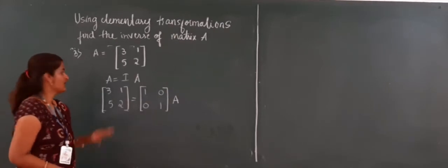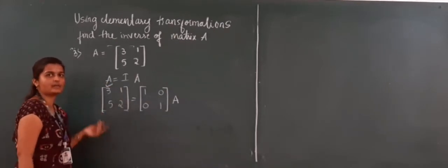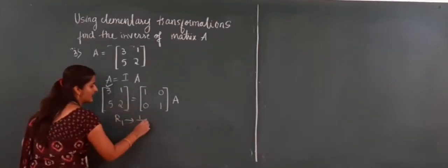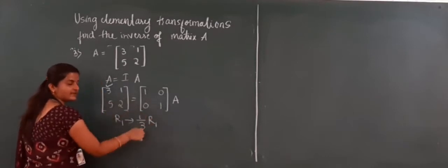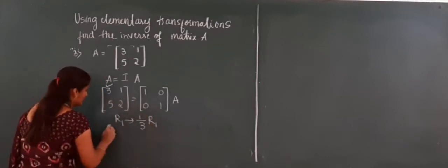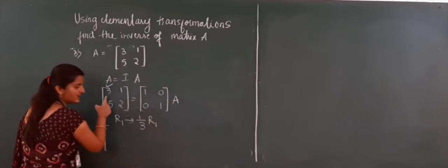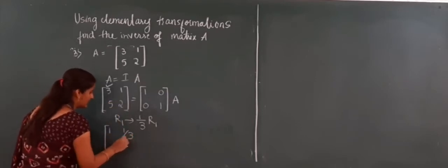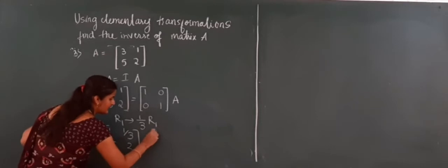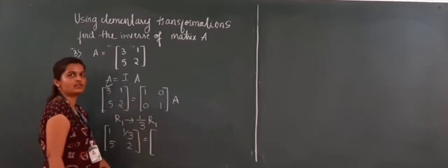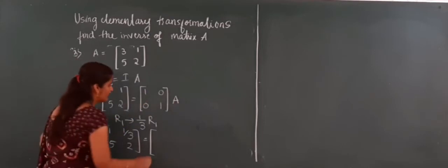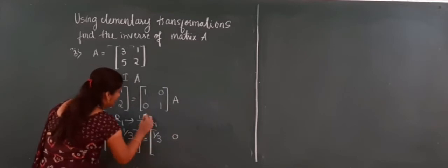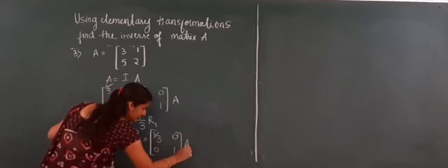So what is the first step? First I have to make the leading element 1. For making 1, I apply the second operation: R1 changes to (1/3)×R1. If 3 is there, use (1/3)R1; if 5 is there, use (1/5)R1. So 3×(1/3) = 1, and 1×(1/3) = 1/3. R2 does not change, it remains as it is. For the identity side, first row: 1×(1/3) = 1/3, 0×(1/3) = 0. R2 remains as it is.